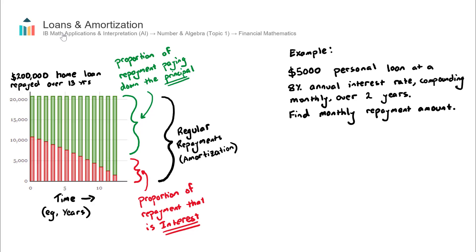This video covers loans and amortization, a concept found in IB Math's AI in Topic 1, Number and Algebra, under the subtopic of Financial Mathematics.